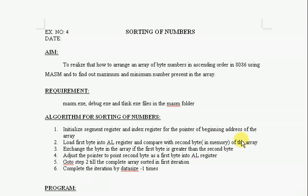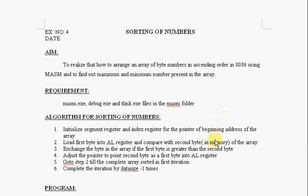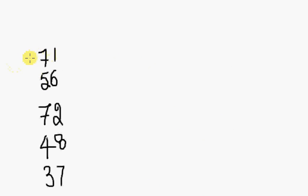Hello, this is the 8086 microprocessor/microcontroller lab experiment number four: sorting of numbers. The aim of this experiment is to realize how to arrange an array of byte numbers in ascending order for 8086, and to find out the maximum and minimum numbers present in the array.